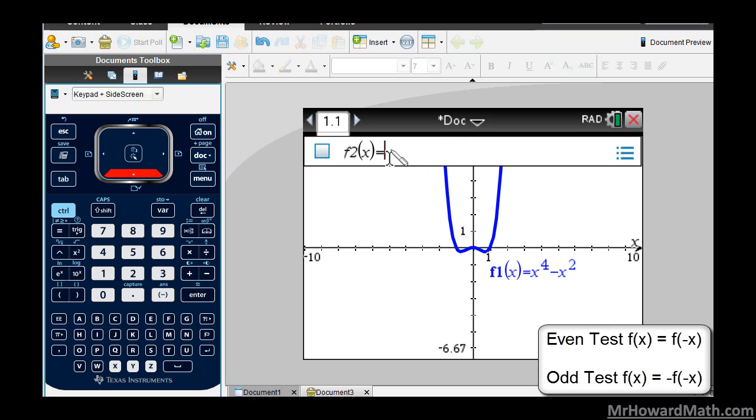To get to that I arrow down and I can enter in here the even test. The even test says that f of x should be the same as f of negative x. To access my function 1 I can hit the variable key, the var key, it's right above 9. I hit enter, that's the one I want, my function 1 that I've already entered. As the input I'm going to put a negative x, because f of x is supposed to be the same as f of negative x if it is an even function.